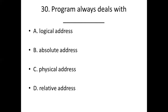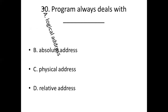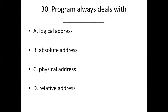Thirtieth bit. Option A: Logical addresses. Option B: Absolute address. Option C: Physical address. Option D: Relative address. Answer: Option A, Logical addresses.